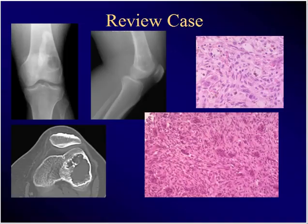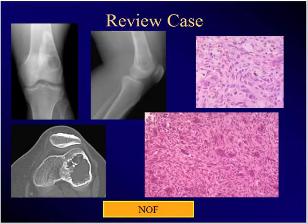Here is a serendipitously found lesion — plain film, CT, and here's the histopath. Be careful. Serendipitously found — is this good or bad? It's not malignant. These are giant cells. What are these dark spots? Hemosiderin. Eccentric, well-demarcated. What is this? It's a big NOF — non-ossifying fibroma. These are actual questions.